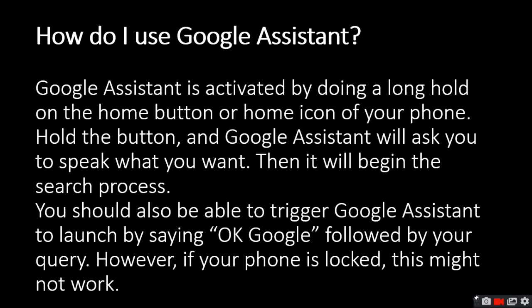Google Assistant is activated by doing a long hold on the home button or home icon of your phone. Hold the button and Google Assistant will ask you to speak what you want. Then it will begin the search process.